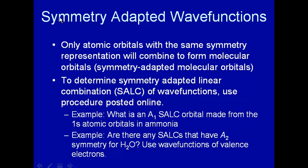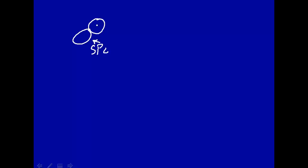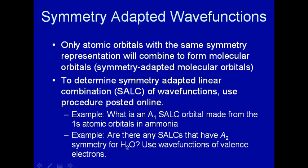Here we're going to talk about symmetry-adapted wave functions. You may recall when we were talking about various theories of bonding — the Lewis dot structure, valence bond, and so on — we had fairly simple ideas, for example bonding in oxygen. We would have an sp2 hybrid orbital on the oxygen overlap with a 1s orbital on hydrogen to form a bond. That's good for an introductory chemistry picture, but it turns out that only atomic orbitals with the same symmetry representation will combine to form molecular orbitals. In other words, these should be symmetry-adapted atomic orbitals.